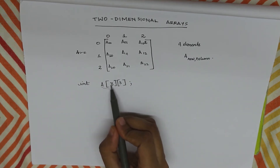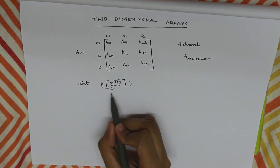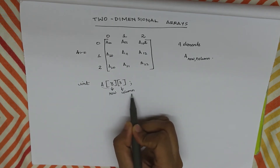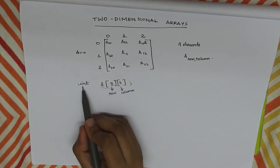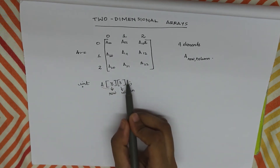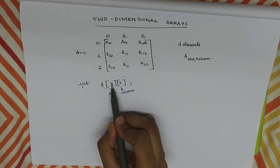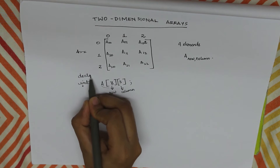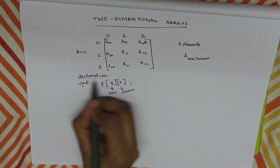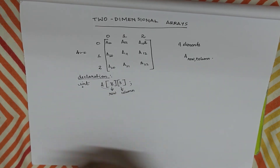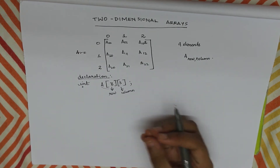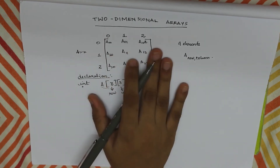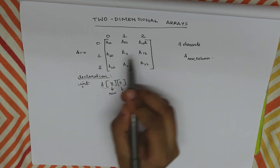We represent it using square brackets — the row number and the column number. How many rows and how many columns? We declare it as integer type. Three rows and three columns — this is our declaration part. We need to use this, we need to send values, we need to retrieve values. Then we need to get values in the matrix.